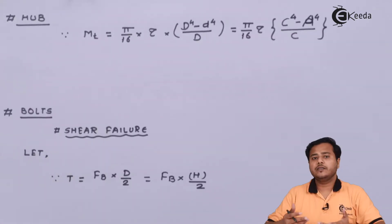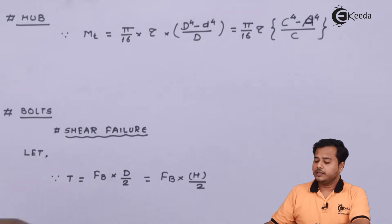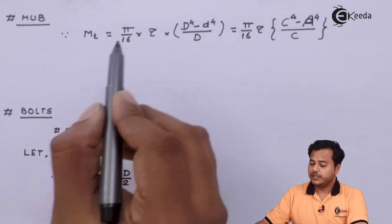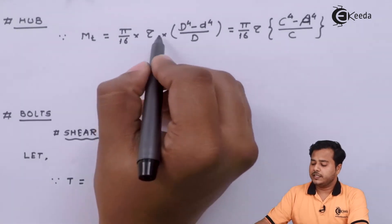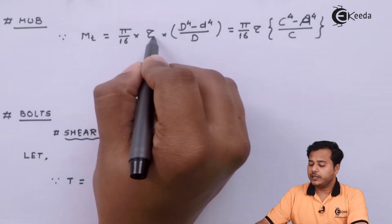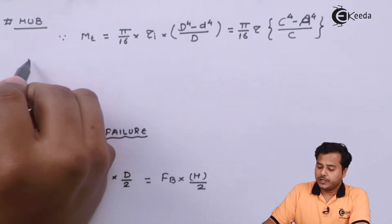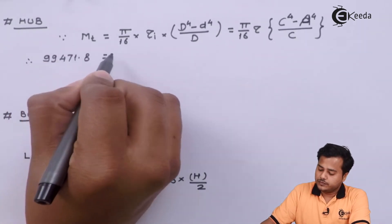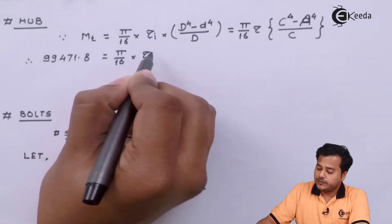The next thing we are going to look at is the hub. We use the standard formula for the hub where it fails under torsion. In this case, τ_induced is the unknown value we need to find. Let us substitute the values.